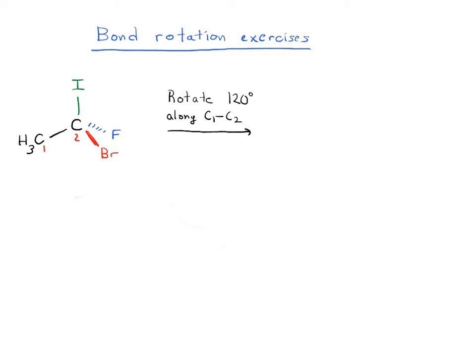All right, so let's have a closer look at this molecule. We've got C, CH3, so let's just redraw it here for a second. CH3 to C, the BR is in the front, the F is in the back, the I is up here.